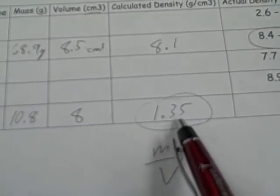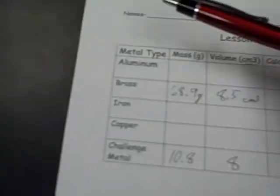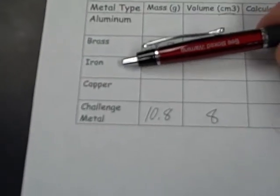And that is how you go about calculating the density. So in the lab today, you're to use aluminum, brass, iron, and copper.